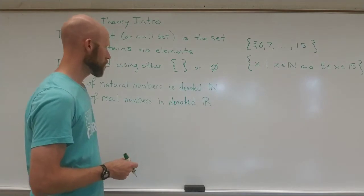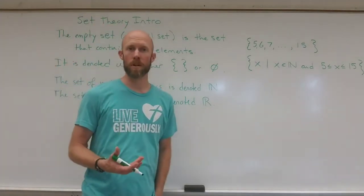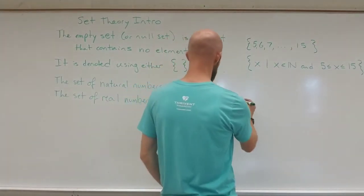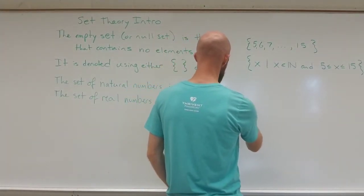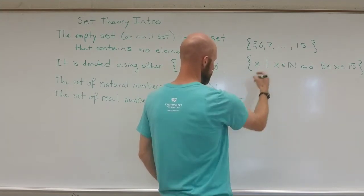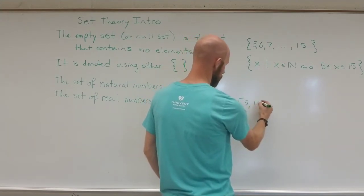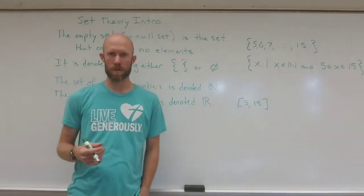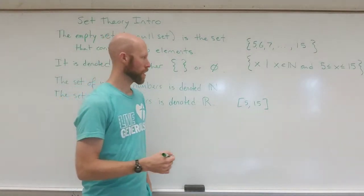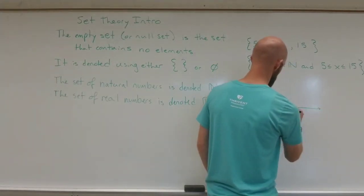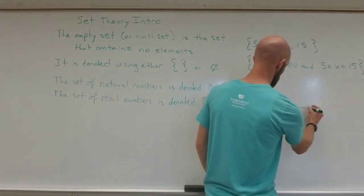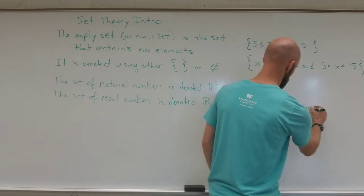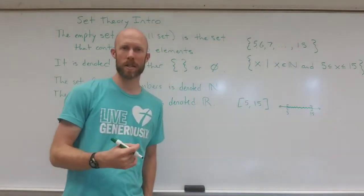We could also do a subset or an interval of the real numbers. Let's say I wanted to look at the real numbers between 5 and 15. It would be like the interval from 5 to 15 inclusive of the end points. On a number line, you'd be looking at everything from 5 to 15, not just the natural numbers.